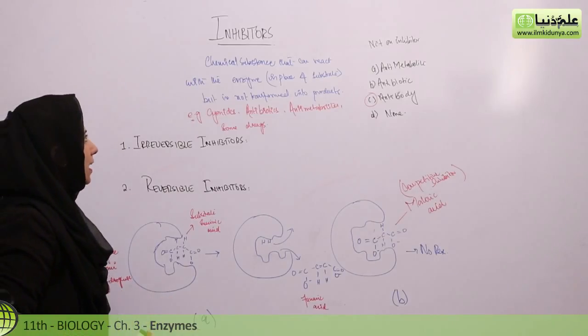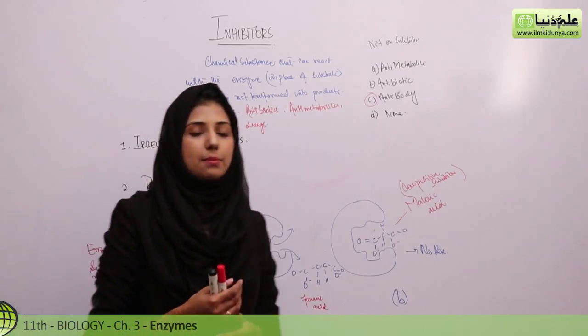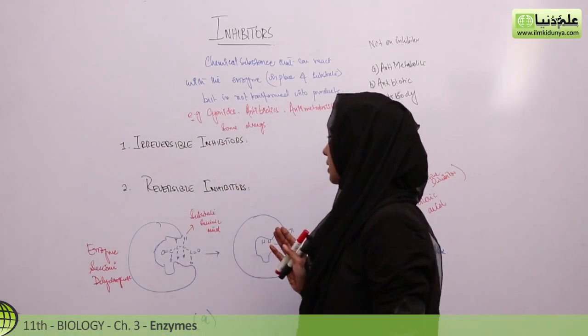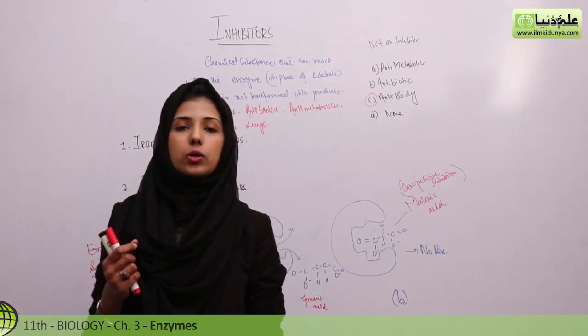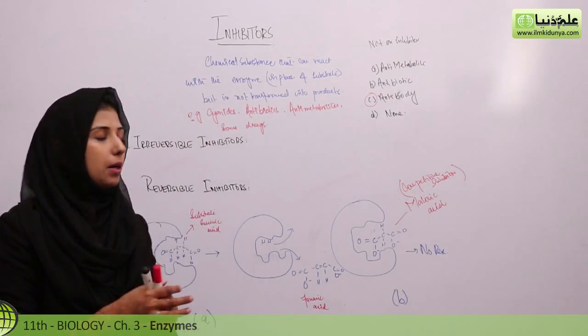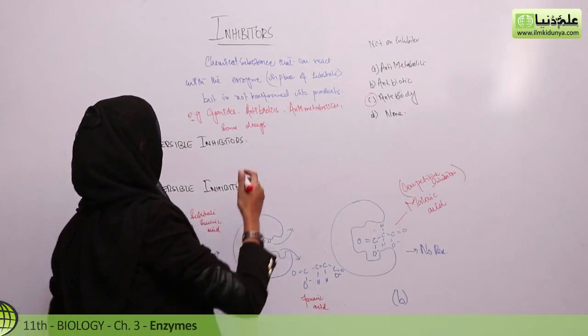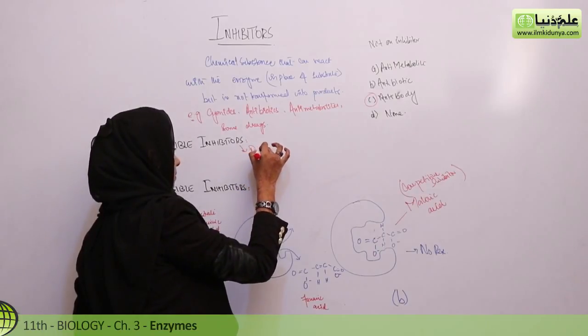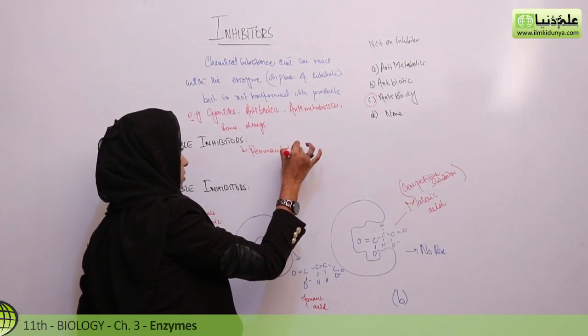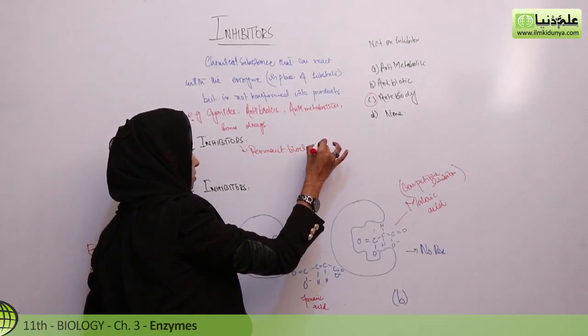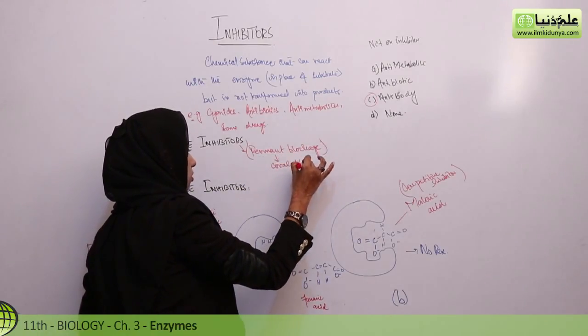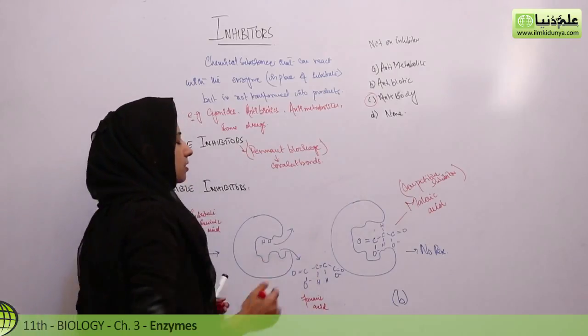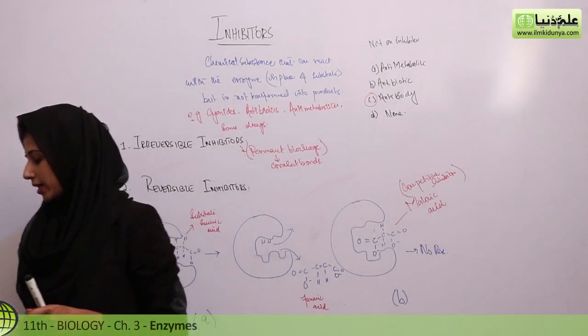There are basically two types of enzyme inhibitors: irreversible inhibitors and reversible inhibitors. Irreversible inhibitors permanently block the enzyme's activity. They cause permanent blockage by forming covalent bonds and permanently block the enzyme's activity.